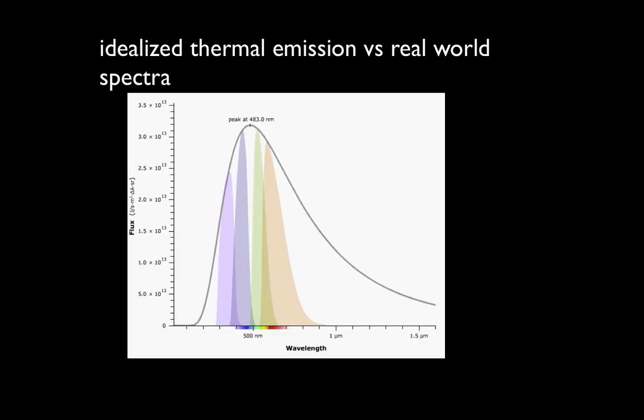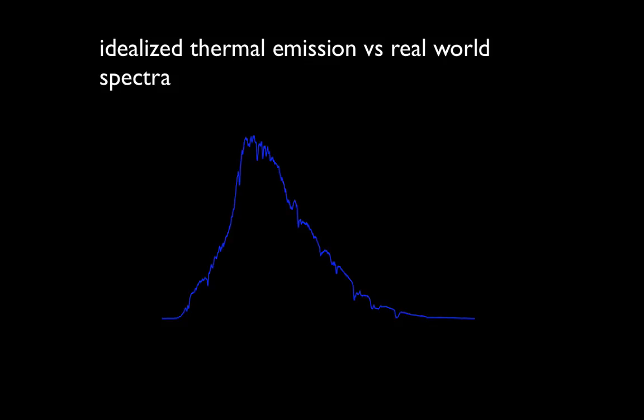In the real world, spectra of stars and other astronomical objects aren't usually just simple thermal emission spectra, like the ones that I'm showing you here. There are often small features on top of these broad thermal emission peaks. This is a comparison of an idealized solar spectrum based on just thermal emission at 6,000 Kelvin, and the actual solar spectrum. Notice that it peaks in the same area, and has the same approximate shape. But on top of that smooth emission, there's a bunch of small features, little absorption lines. The origin of these features will be discussed in detail in the next video.